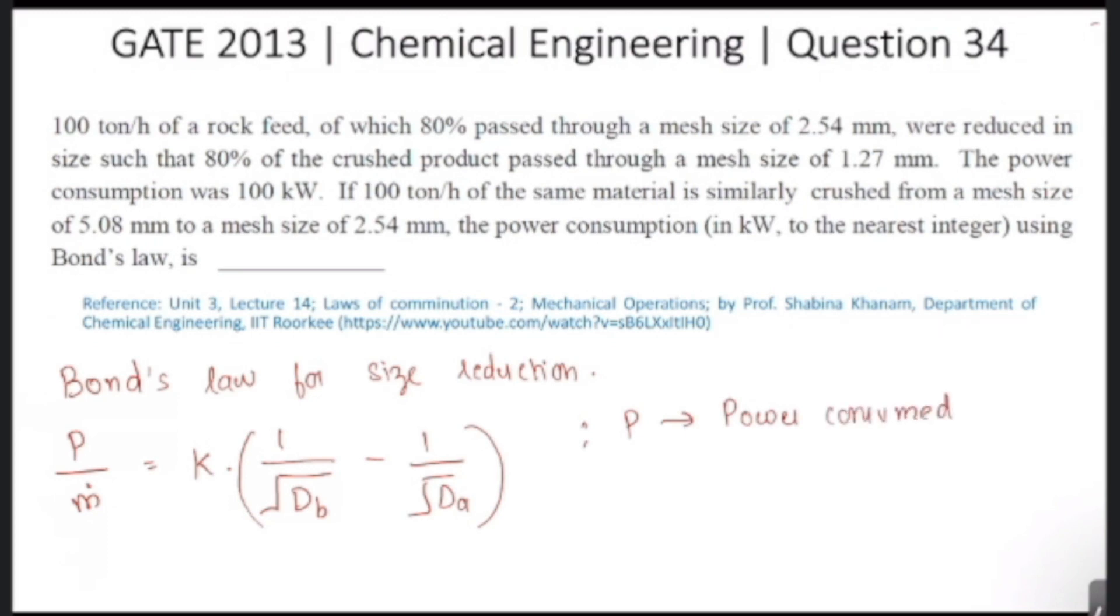m dot is the feed rate in tons per hour. Db and Da are the dia of the feed and product.